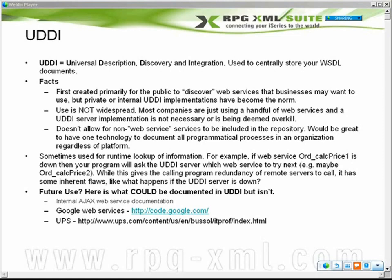Well, what happens if the UDDI server goes down? You're kind of out of luck. The mechanism I prefer is to simply describe a configuration physical file on the iSeries that my RPG program will read, with failover URLs right within that physical file. So if CalcPrize 1 wasn't successful, go to web service CalcPrize 2 — and if you connect to that one, you're good to go.